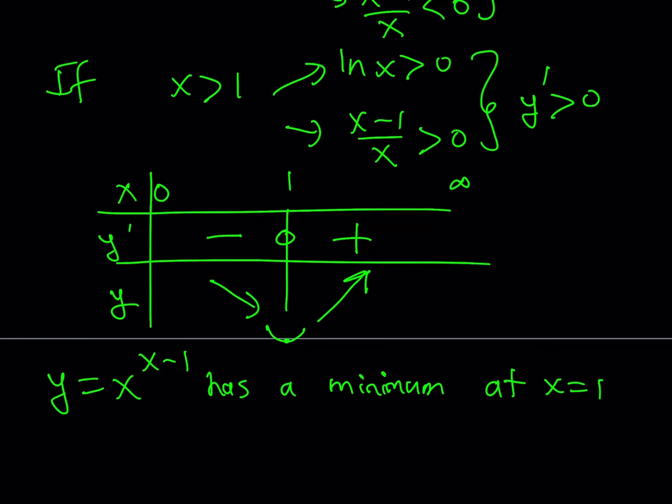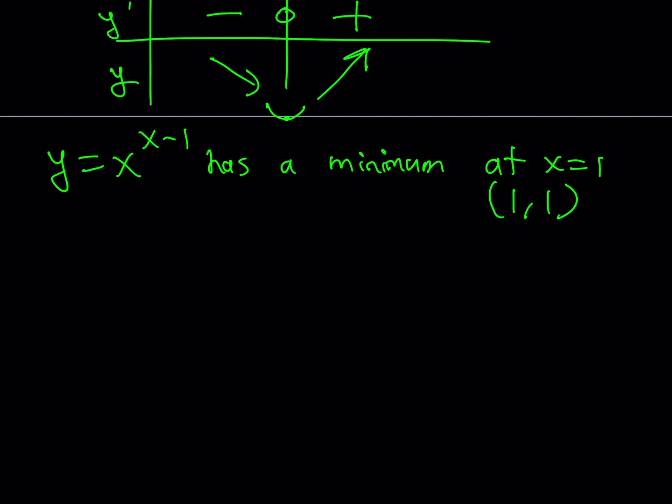So our function y equals x to the power x minus 1 has a minimum at x equals 1. And to be more specific, that point is 1, 1. At 1, 1, our function has a minimum. So it's kind of like this. The function goes down and then goes up, and this is 1, 1, which is where the function makes a minimum point.